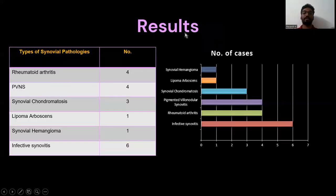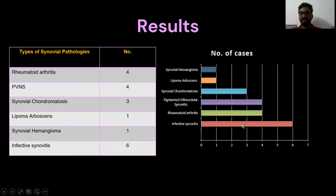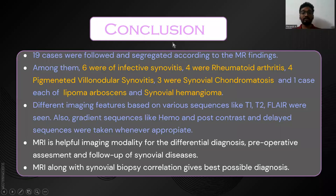Based on MRI features, synovial biopsy, and arthroscopic follow-up, patients were divided according to synovial pathologies. The most common pathology was infective synovitis with six patients. In conclusion, among the 19 cases: six were infective synovitis, four were rheumatoid arthritis, four were pigmented villonodular synovitis, three were synovial chondromatosis, and one each of lipoma arborescens and synovial hemangioma.